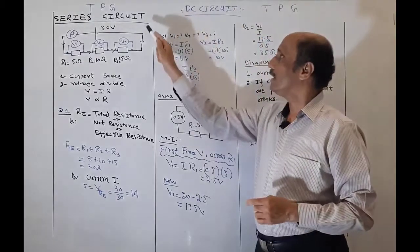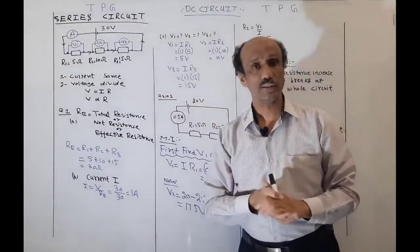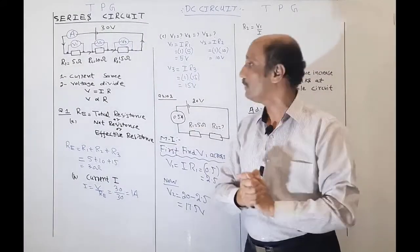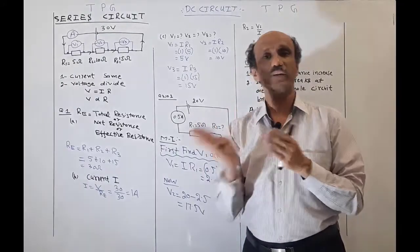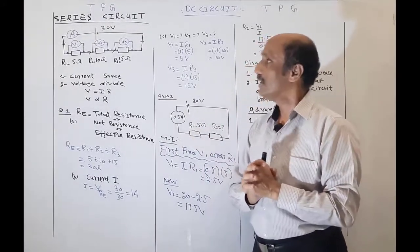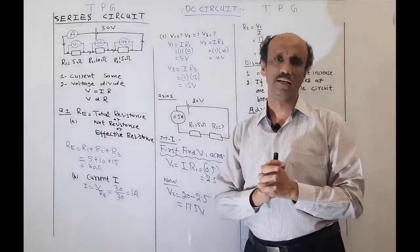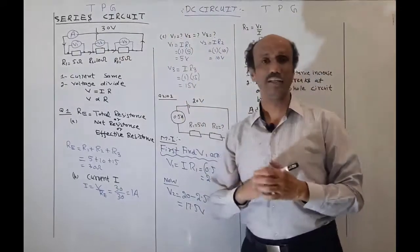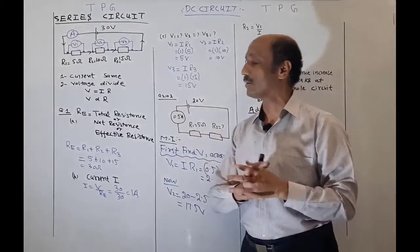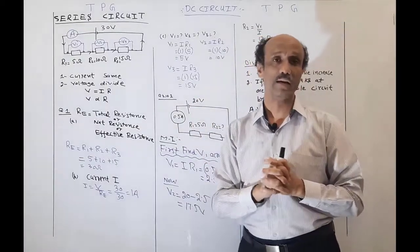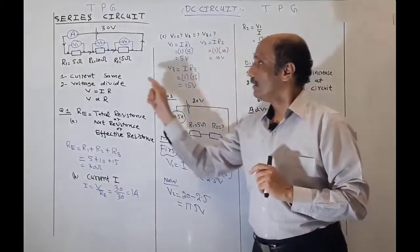In a series combination, components form a single loop for the flow of current. For example: a cell of 30 volts, first resistance 5 ohm, second resistance 10 ohm, and third resistance 15 ohm, all attached one after another. The ammeter is connected in series, and voltmeters V1, V2, and V3 are connected in parallel across R1, R2, and R3 respectively.